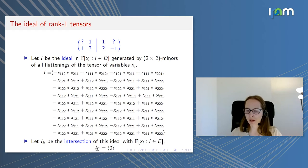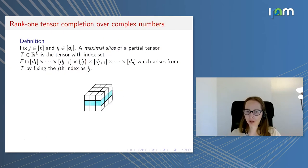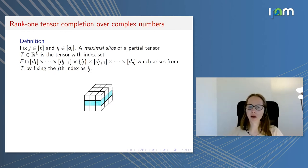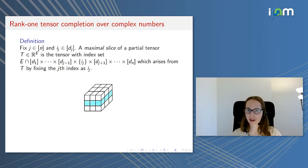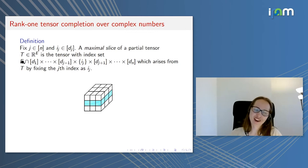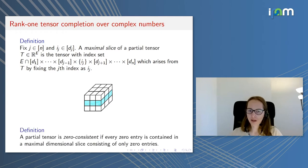This ideal will be used to characterize when a partial tensor is rank-one completable. Before I give the main result, let me give a few more definitions. Fix a mode J and an index IJ. A maximal slice of a partial tensor is the tensor with entries where we fix the J-th mode to index IJ. We call a partial tensor zero-consistent if every zero entry is contained in a maximal dimensional slice consisting of only zero entries. This definition comes from the fact that if a rank-one tensor has a zero entry, then because a rank-one tensor is a tensor product of vectors, one of the defining vectors must have a zero, giving a slice of zeros.